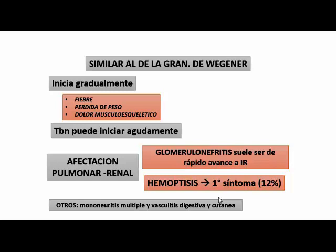En el diagnóstico diferencial también tendríamos que pensar en Goodpasture, que no es una vasculitis sino es una lesión fundamentalmente antígeno-anticuerpo de antimembrana basal. Pero como vasculitis, dentro del diagnóstico diferencial está el Wegener. Puede producir una glomerulonefritis rápidamente progresiva con falla renal. La hemoptisis es el primer síntoma en un buen grupo de pacientes. También puede afectar el sistema nervioso con mononeuritis múltiple, incluso con vasculitis digestiva y cutánea.